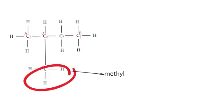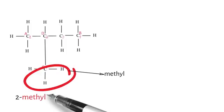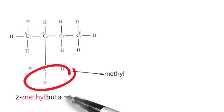So what is the IUPAC name? Remember, we must specify the branch position. Since we found the methyl branch on carbon number two, the name starts with 2-methyl. The branch name comes at the very beginning of the word, and the main chain is butane. So the complete IUPAC name is 2-methylbutane.